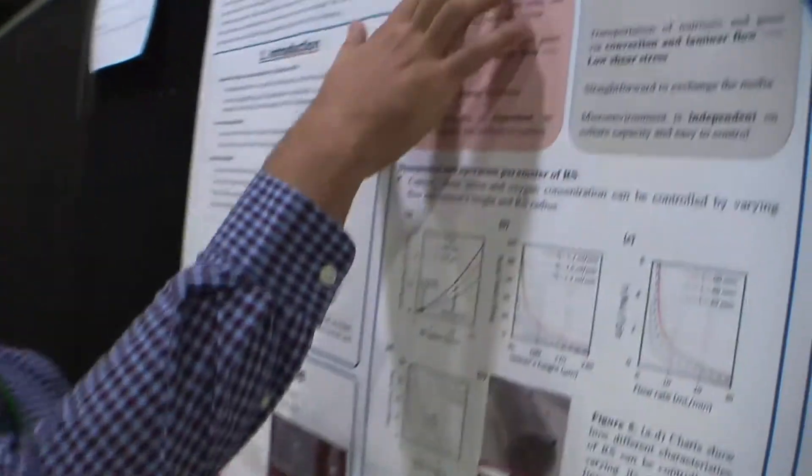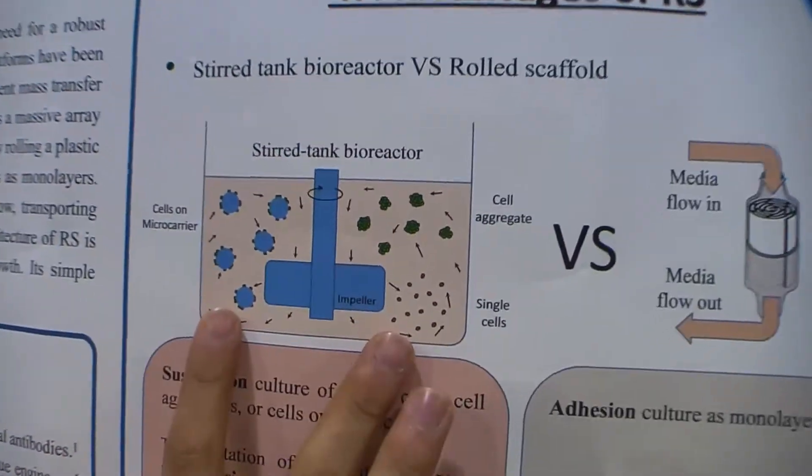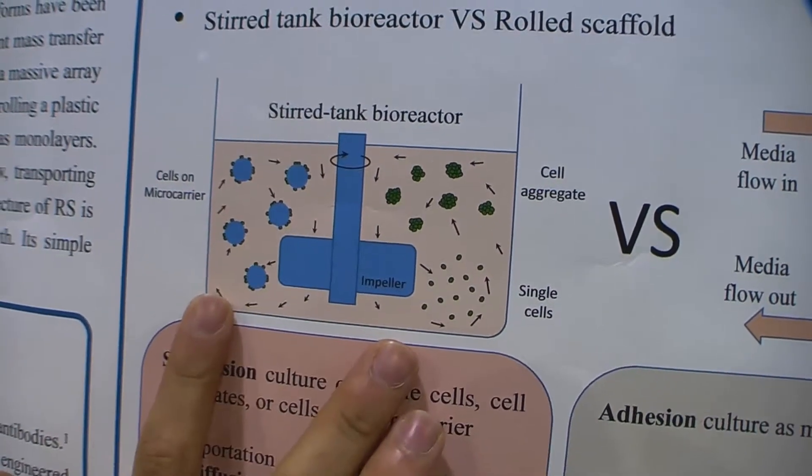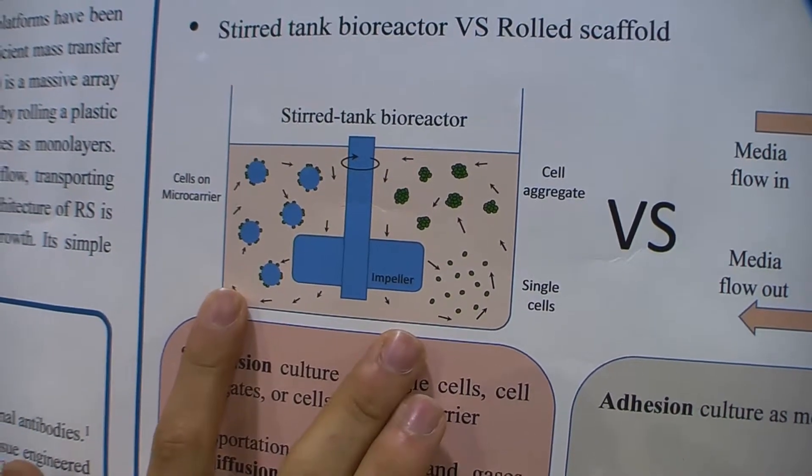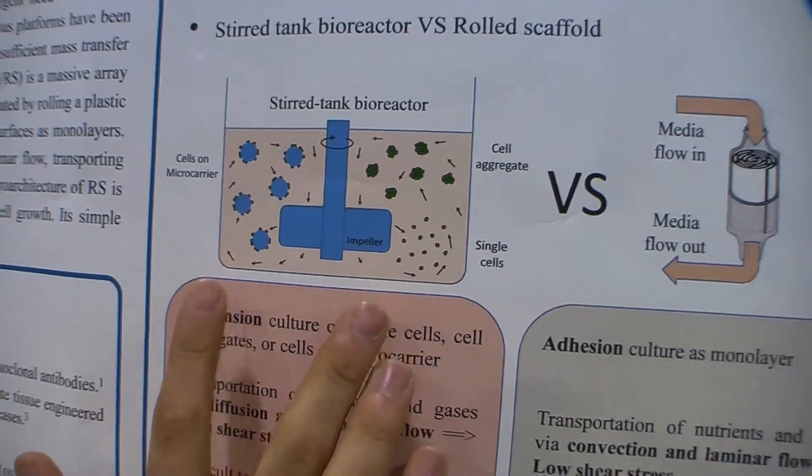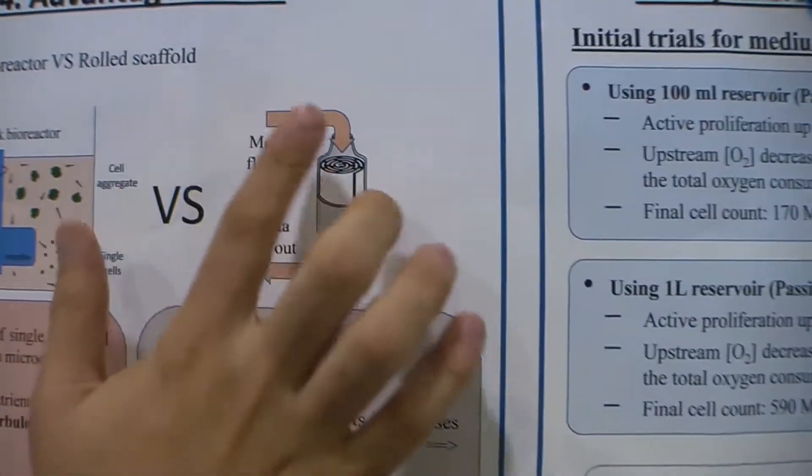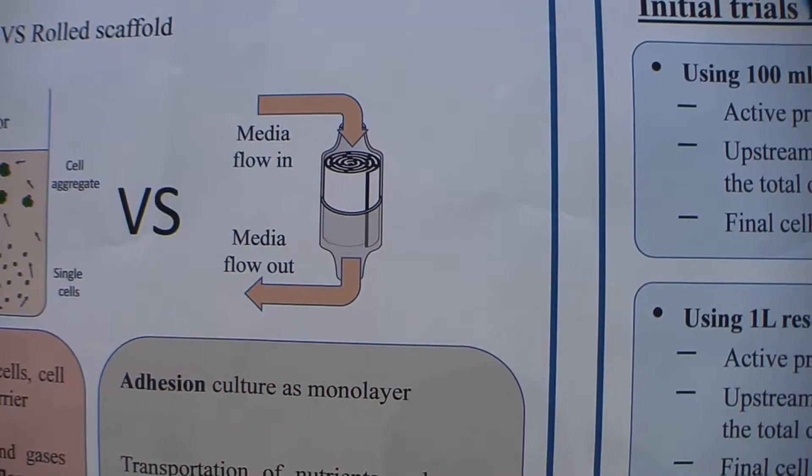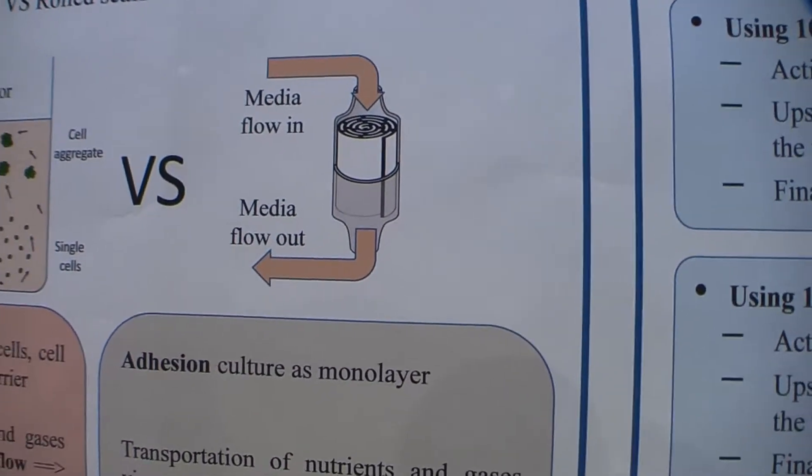The main advantage of the Roll the Scaffold compared to previous techniques is that in previous techniques, cells are growing in a stirred tank bioreactor in cell suspension. There is a lot of turbulence and the cells experience high shear stress. But in our case, since the media flows through the microfluidic channels, it has laminar flow, and the shear stress on the cells is very minimal.